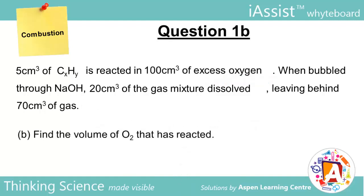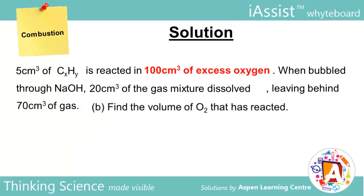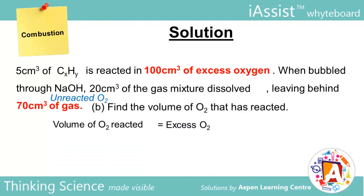Now try Part B. Note that the initial amount of O2 is in excess. After reaction, any O2 left has not been reacted. Hence, to find the amount of reacted O2, we take the initial amount minus the leftover, giving us 100 minus 70, which equals 30 cm³.